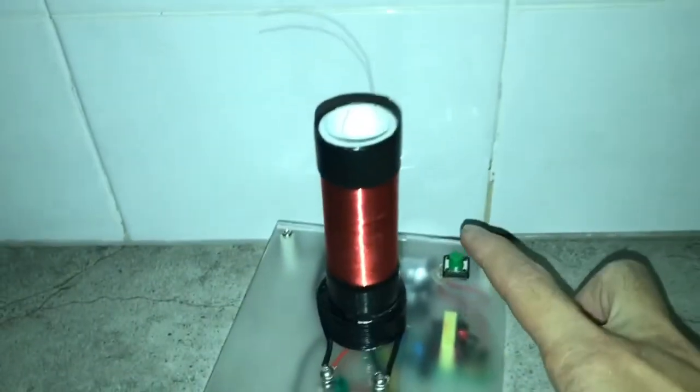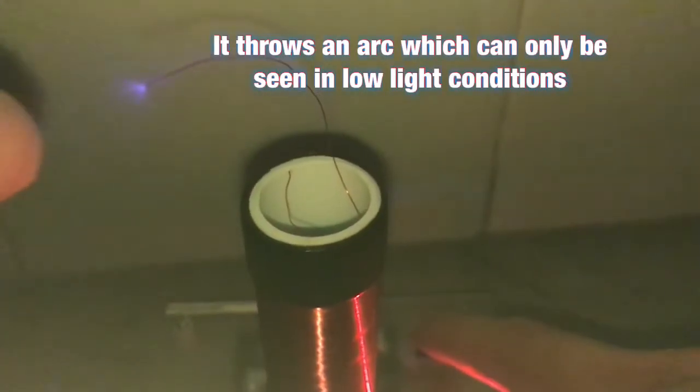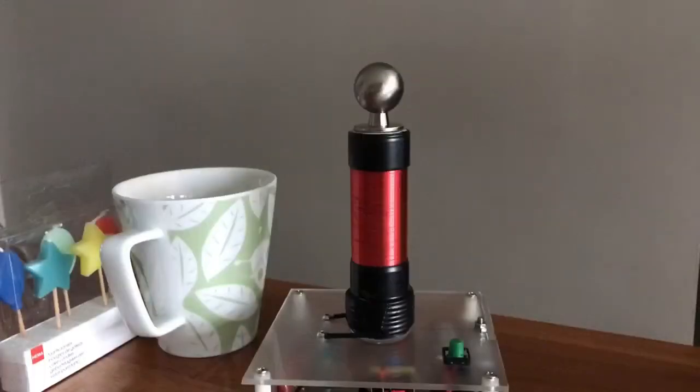As you can see by now, the DIY Tesla coil here has a much weaker arc than the one that was purchased. I have to dim the light in order to see the arc that was drawn.